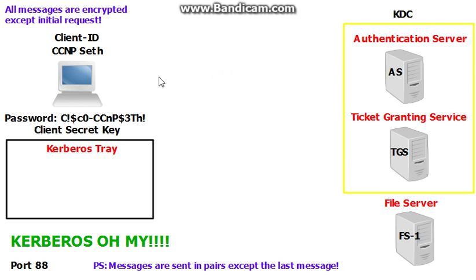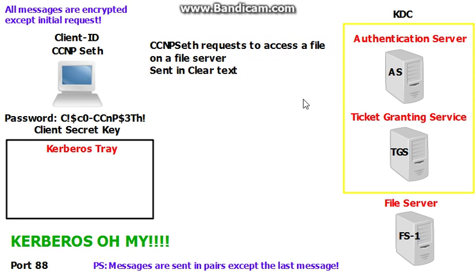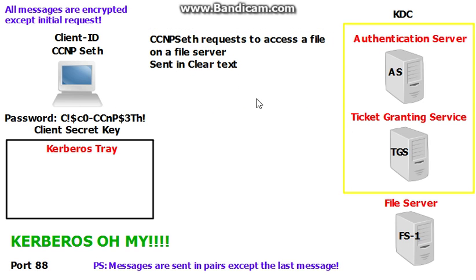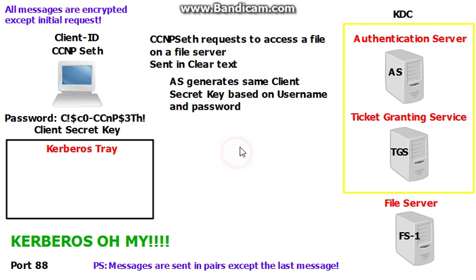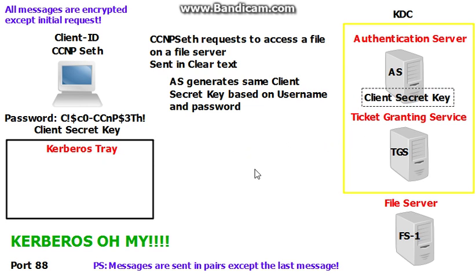Client CCMP Seth wants to access a file on this file server. What he does is he sends a request to the authentication server in clear text — he sends his username. Based on that username, the authentication server generates a client secret key based on the username and password. If everything is correct, the client will also generate that same client secret key. Now they both have the same key and can send encrypted messages to each other.